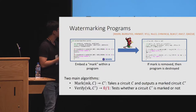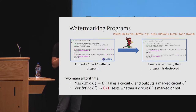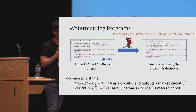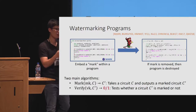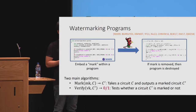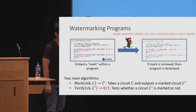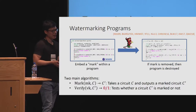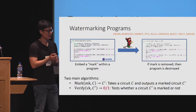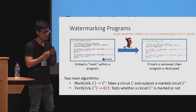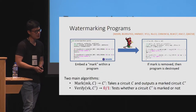For this talk, we'll focus on a simpler version of the watermarking scheme where all the circuits are either marked or unmarked. The verification algorithm basically takes in a circuit and outputs zero or one, depending on whether the circuit is marked or not. This is the traditional syntax for a watermarking scheme. So what are some of the properties that these two algorithms should satisfy?